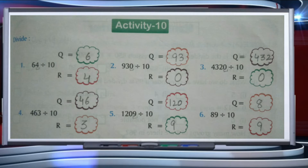The second question is 930 divided by 10. The digit on the ones place is 0, so the remainder is 0 and the quotient is 93.